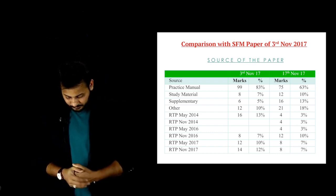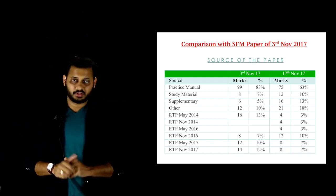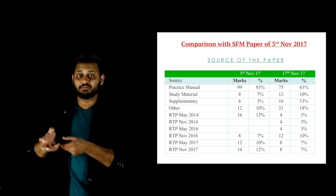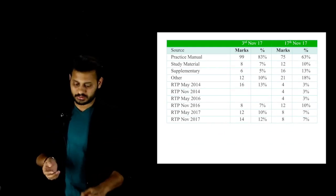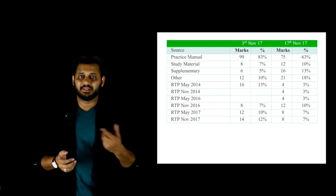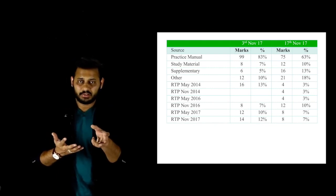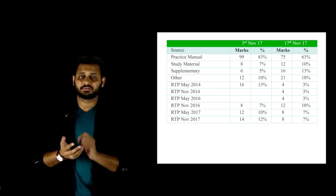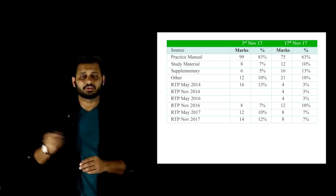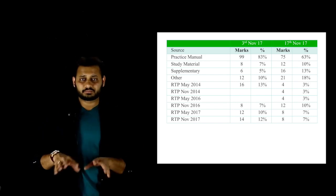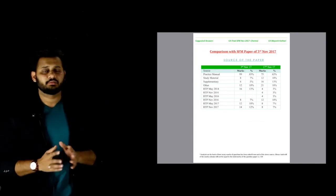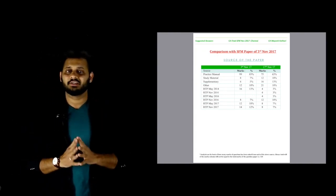So I have did a little bit more research for the RTPs also and I have included those here also that from which RTP, how many marks has been asked. The total will not match to 120 because I have taken a different basis. I have gone through the entire RTP and searched for questions that have been asked today in the paper on 3rd November or 17th November. So I picked up that and put that here in the table. So this analysis you can get in a PDF format in the description, you will find the link.